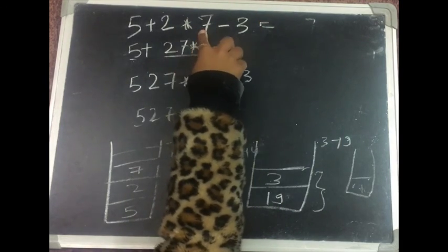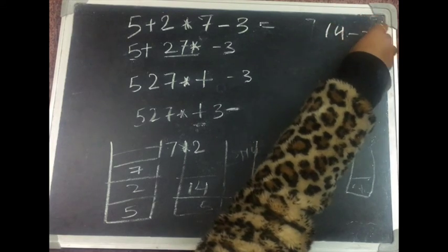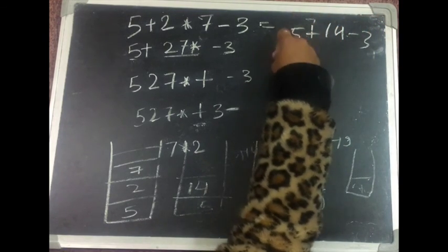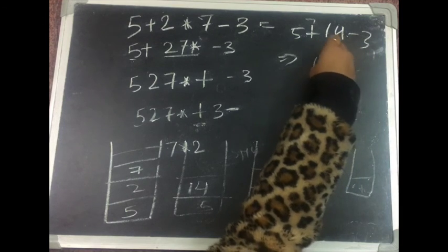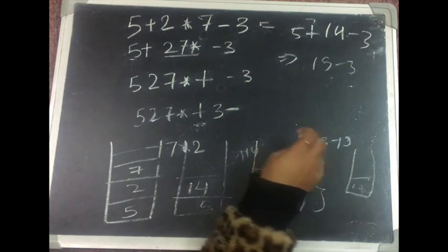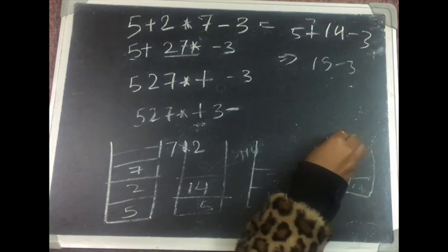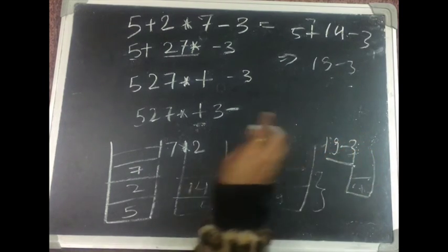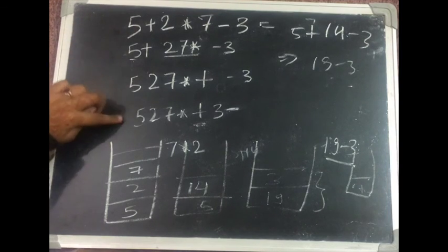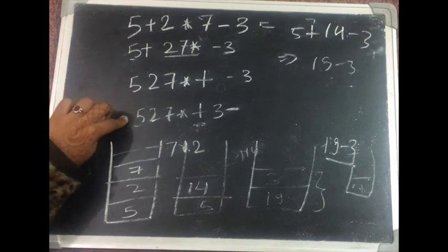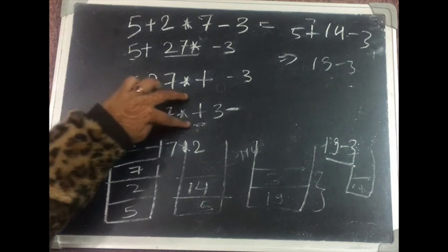Let's verify: 7 into 2 is 14, 14 plus 5 is 19, and 19 minus 3 gives the final answer. So 5 plus 2 into 7 minus 3 equals 16. That shows how we converted an infix expression to postfix and then evaluated the postfix expression using a stack.